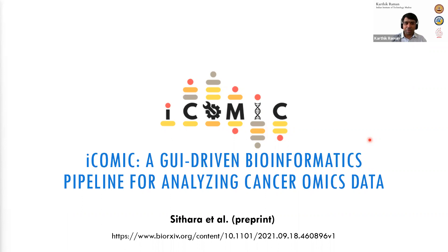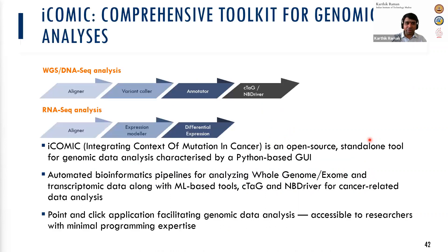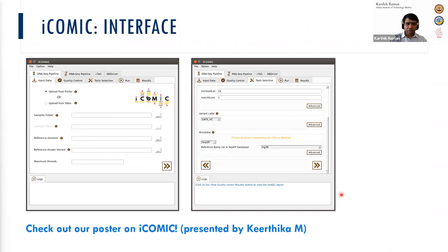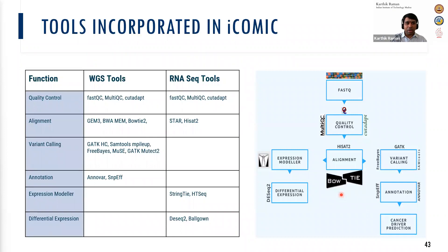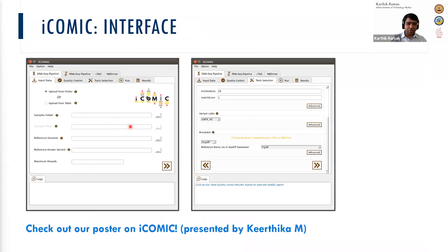We also have a GUI-driven bioinformatics pipeline for analyzing cancer omics data, which we call iCoMIC. It has several tools for whole genome data analysis and RNA-seq data analysis. It is GUI-based — you don't have to know any command line parameters. You can tune command line parameters via the GUI or just click default parameters and run. It's a point-and-click application for those not familiar with programming, with tools for quality control, alignment, variant calling, and more. You can load files or an entire folder of samples and run the whole pipeline.